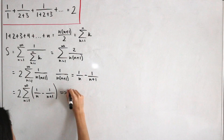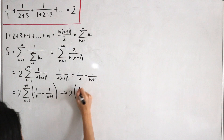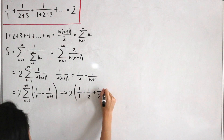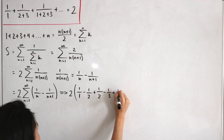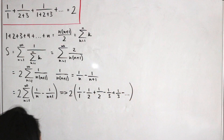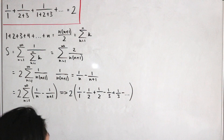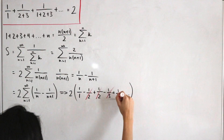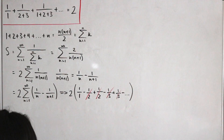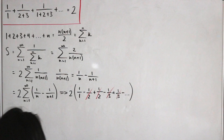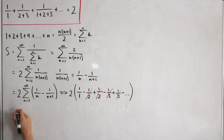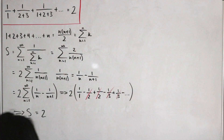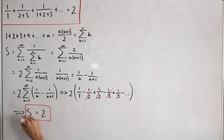Expanding this series: we get two times one over one minus one over two, plus one over two minus one over three, plus one over three, and so on. The terms cancel out — this is a telescoping series. Taking this all the way to infinity, everything cancels except the first term, leaving S equals two.